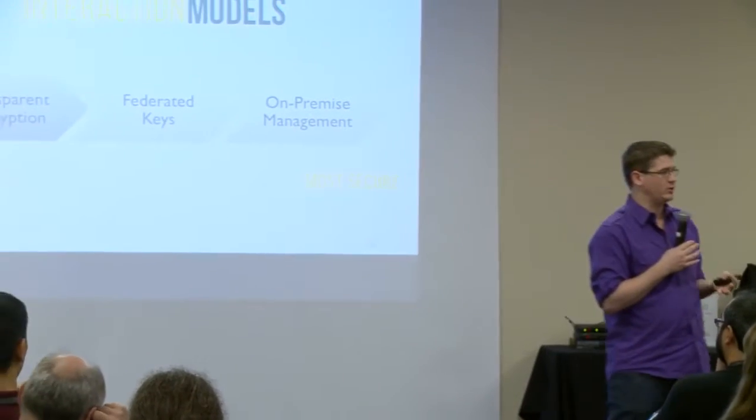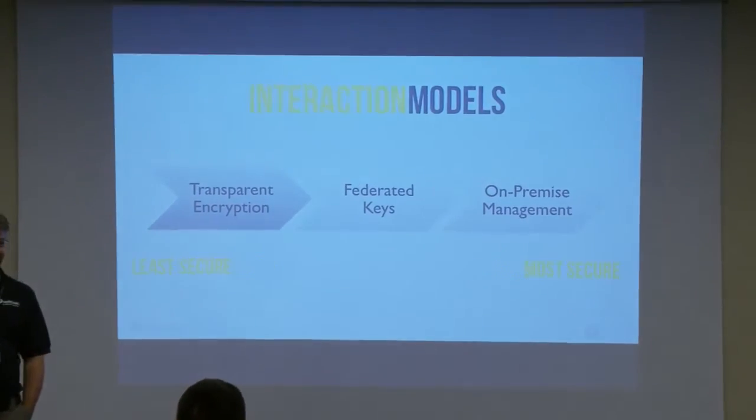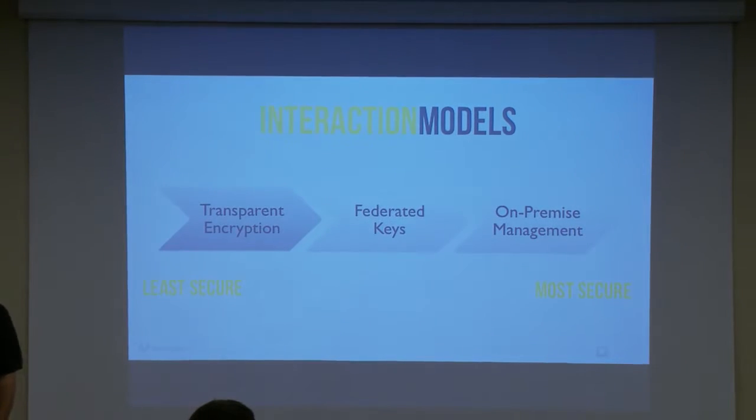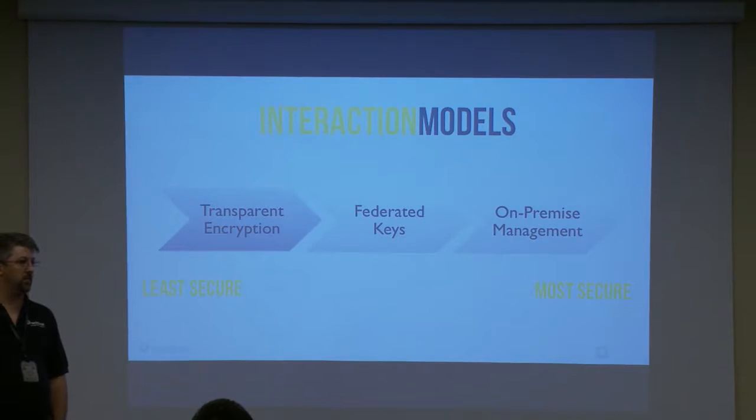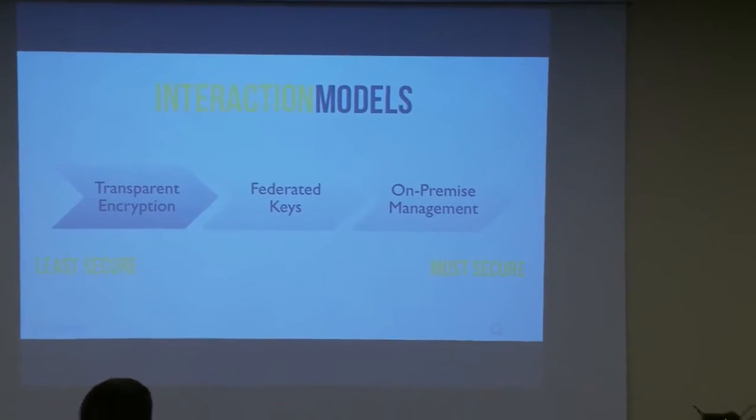Barbican supports three different interaction models. First is transparent encryption: a good majority of customers want to encrypt because CIO Magazine said encryption is good, so they want to tick a checkbox. They don't understand the depth of infrastructure required for key management, so they want a provider like Rackspace to do it for them. As security professionals, we know that's not a particularly secure model — Rackspace owns both the key and the encrypted data, so if the NSA shows up with a court order, we have to give them the data. It really only protects against something like a hard drive walking away from a data center, but it does solve most compliance-related requirements.